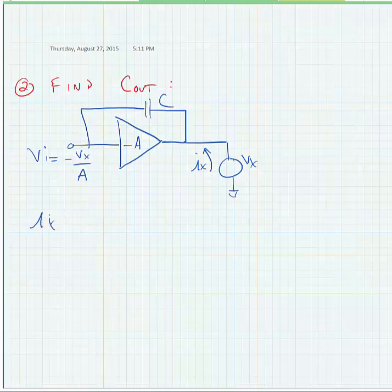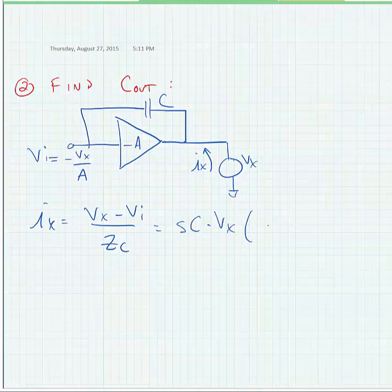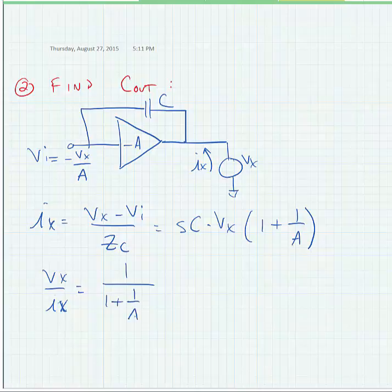Now, we can write Ix is equal to Vx minus Vi divided by Zc. And this is equal to Sc times Vx times 1 plus 1 over A. Solving for Vx over Ix, we see that this is equal to 1 over 1 plus 1 over A times Sc.